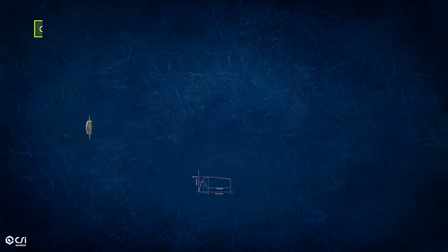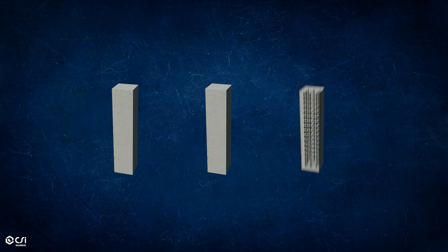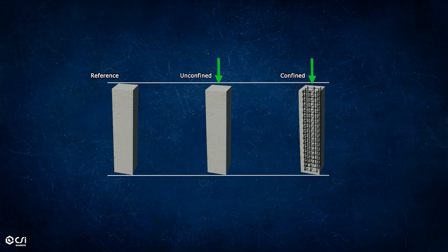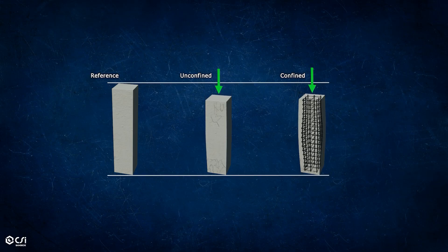When comparing two columns—one confined by transverse reinforcement and one unconfined—the capacity of the confined column to carry larger loads with larger deformation without breaking is clearly higher.